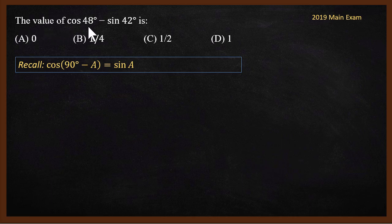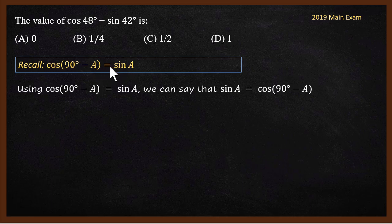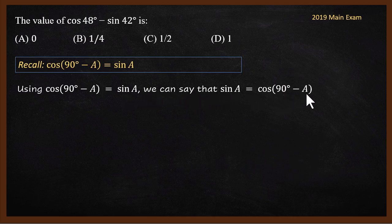What is the value of cos 48° minus sin 42°? The choices are 0, 1 by 4, half, and 1. To solve this we will use the identity cos(90° − a) = sin a, so sin a = cos(90° − a).